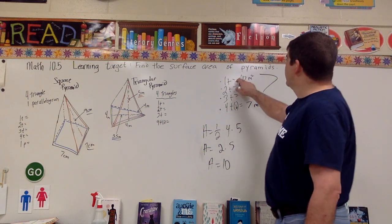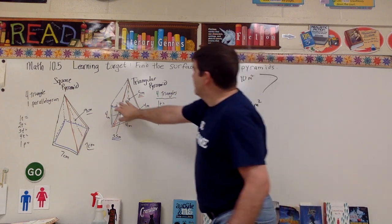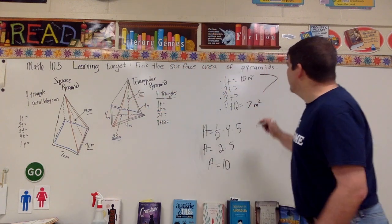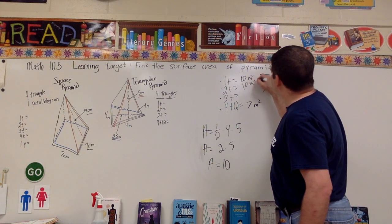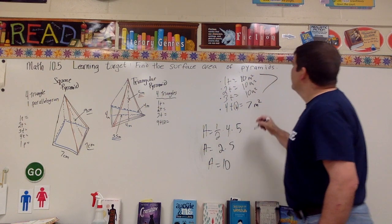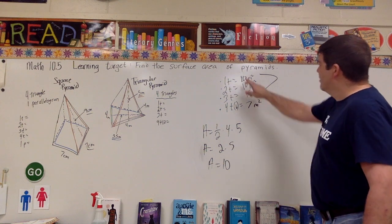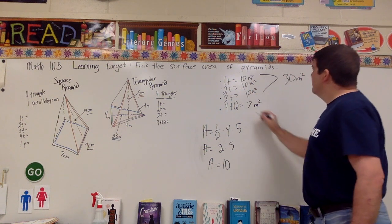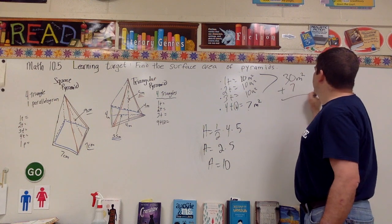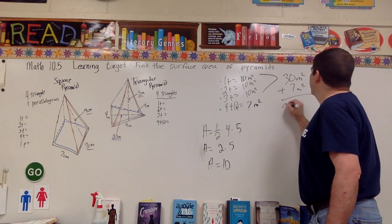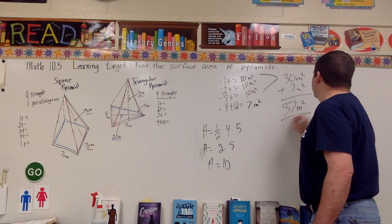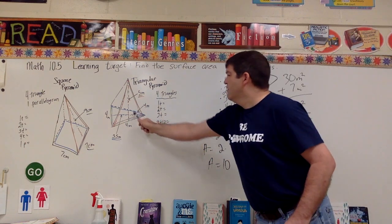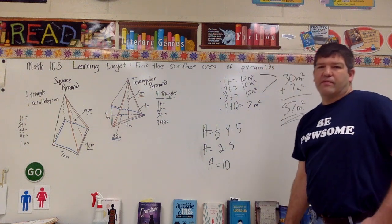Because each side triangle is ten meters squared and they're all the same, I multiply ten times three to get thirty meters squared for all three sides. Then I add the base of seven meters squared, giving a total of thirty-seven meters squared. That is the surface area for this triangular pyramid.